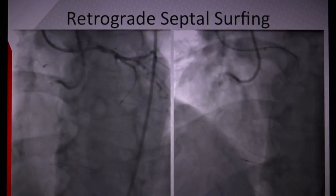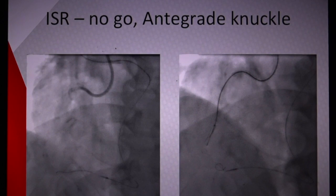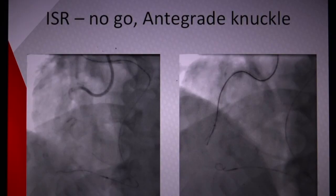We started off using the technique of retrograde septal surfing, as seen in these pictures, using a Xion wire and long Corsair catheter. We got through to the RCA stent using the retrograde wire and the long Corsair microcatheter, but we couldn't get through the stent in a retrograde fashion. So at this point we took an antegrade wire approach whilst leaving the retrograde gear in place, using an antegrade shorter Corsair microcatheter to try to get into the ISR of the CTO.